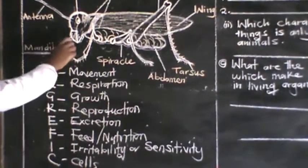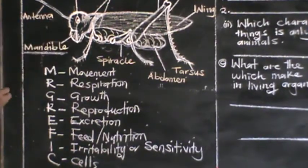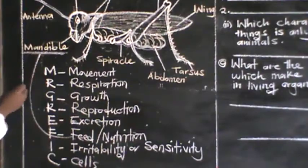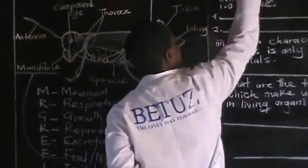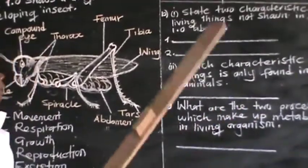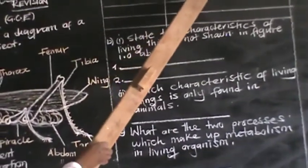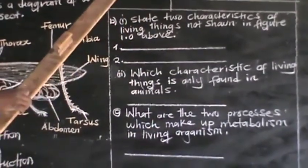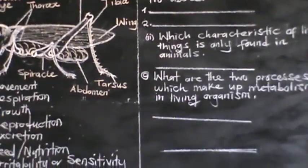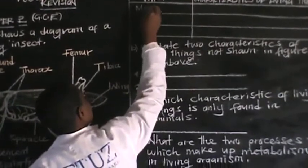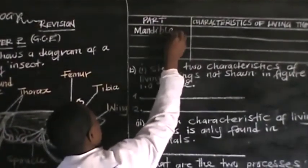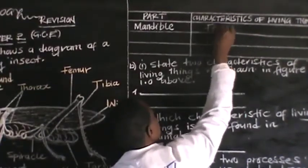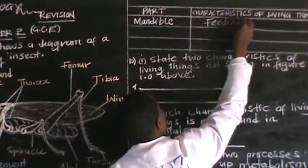So if you identify a part, like in my case, the mandibles — the mandibles are associated with which characteristic? It's feeding. Meaning these insects feed. So you write: part — mandibles; characteristic — feeding.